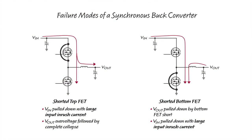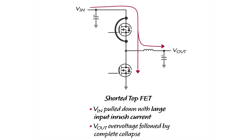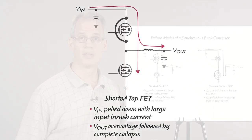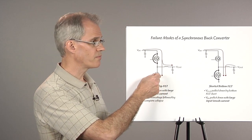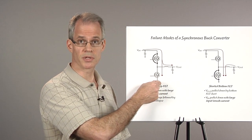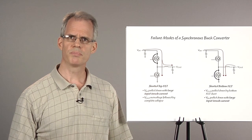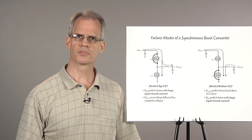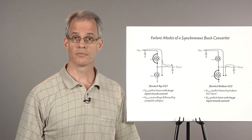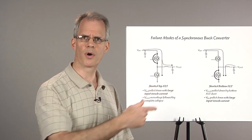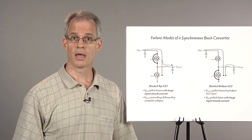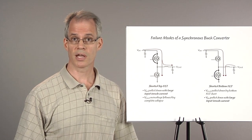Either the top FET or bottom FET can fail in a synchronous buck converter. If the top FET fails short, then large inrush current will flow into the fault. This current is due to the input voltage being shorted to ground each time the bottom FET turns on every switching cycle. Once the input voltage is pulled below the under-voltage threshold of the converter, the converter will shut down and fault current will flow to the output, where it will cause a momentary over-voltage. Afterwards, the output voltage will collapse.